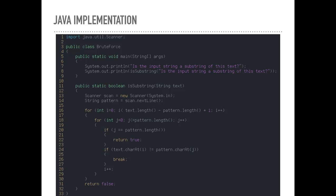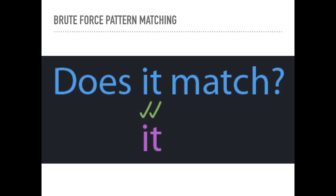Here's a Java implementation. The class is called BruteForce and the method is called isSubstring, which accepts a text string. The pattern is going to be input by the user — we use the Scanner object to assign the pattern to a string variable called pattern. It will prompt the user for input and save it as pattern. The text is passed in as a parameter.